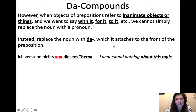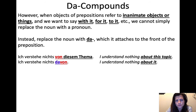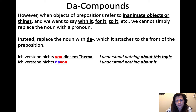So, 'ich verstehe nichts von diesem Thema' — I understand nothing about this topic. 'Von' is kind of like 'about' in this sense, and 'diesem Thema' is the object of the preposition in the dative, because 'von' requires the dative. So what do we want to do if we're going to say 'about it'? We're not going to say 'von ihm,' because even though 'ihm' is the neuter dative pronoun, since this is an inanimate object or idea, we use the da-compound. We just do 'da' plus the preposition — 'davon' — meaning 'about it' or 'of it.'